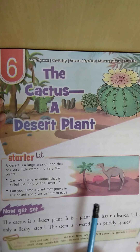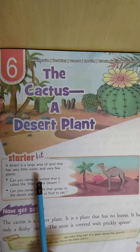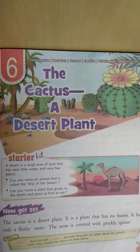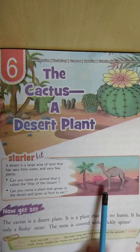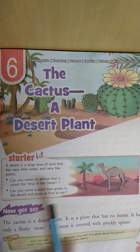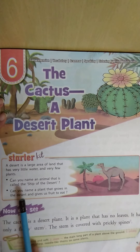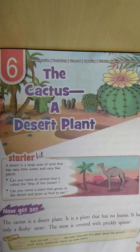Now what is meant by cactus? First, can you name an animal that is called the ship of the desert? The camel, because the camel can easily walk in the sand — that is why the camel is known as the ship of the desert. Can you also name a plant that grows in the desert and gives us fruit to eat?